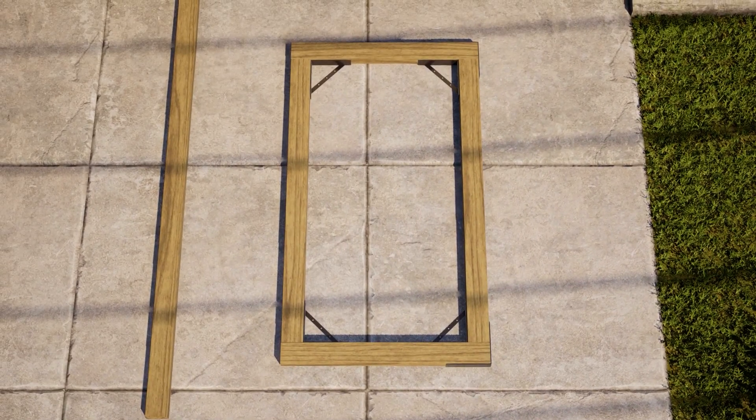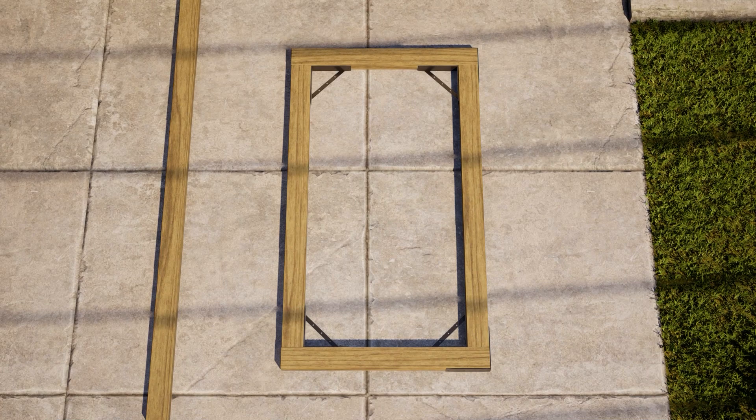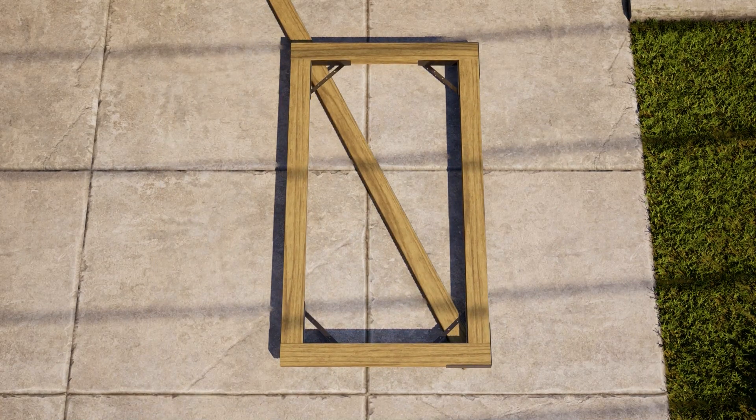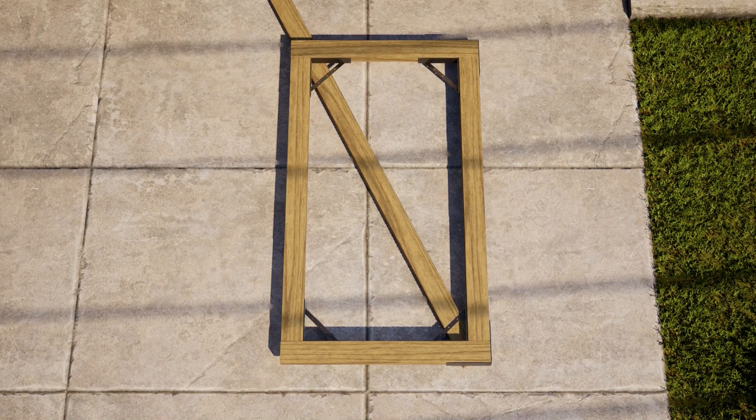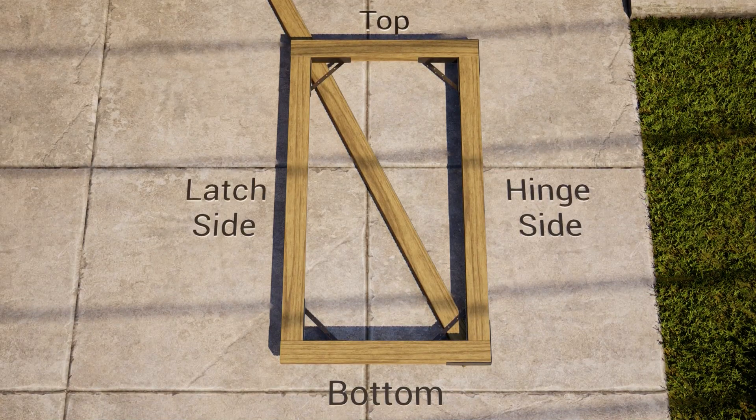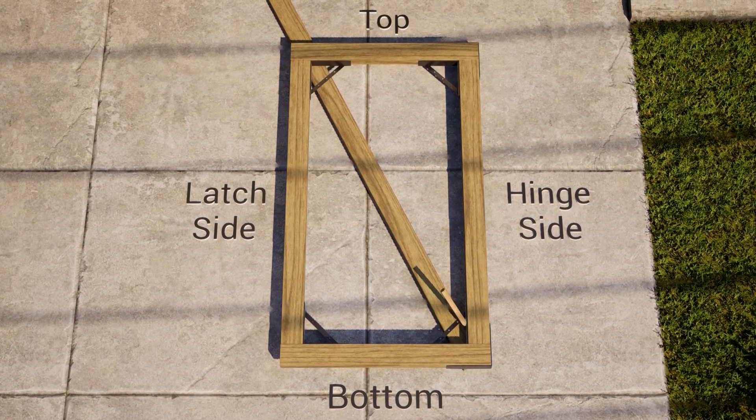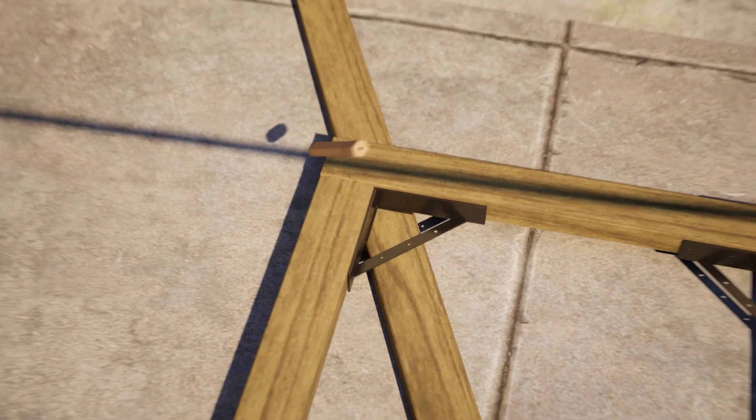A cross brace is recommended for vertical gates 40 inches and wider, and all horizontal gates for strength and to prevent sagging. To create a diagonal cross brace for added stability, lay another piece of 2x4 lumber underneath the frame diagonally between the bottom hinge side corner to the top latch side corner. Pencil cut marks on the 2x4 and cut to fit.